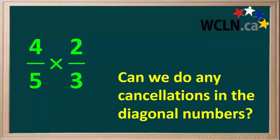The next thing we check is whether or not we can do any cancellations in the diagonal numbers. Checking the diagonal numbers 4 and 3, there is no number other than 1 that will divide into both of these, so we cannot do any cancellations in these. Now we check the other diagonals 2 and 5, and we see there's nothing we can cancel here either.